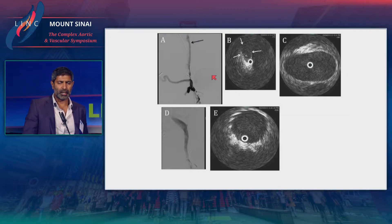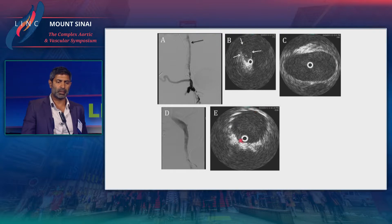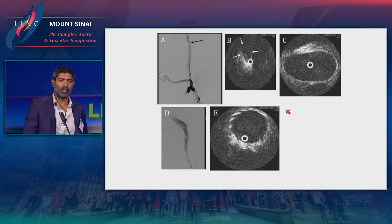Taking that patient to venography and IVUS, you can see before, this is the size of the vein above or below it — it's much bigger and normal. And this is post-stenting. This is the sort of picture you're going to see in these non-thrombotic patients.